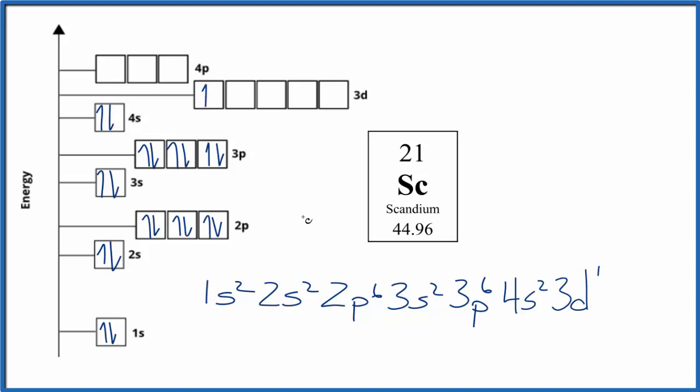And this is the atomic orbital diagram for scandium. Again, all we're trying to do is represent where those electrons are around the nucleus of the scandium atom. This is Dr. B with the atomic orbital diagram for scandium. Thanks for watching.